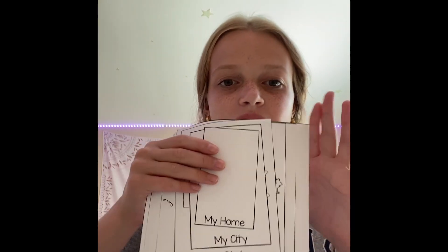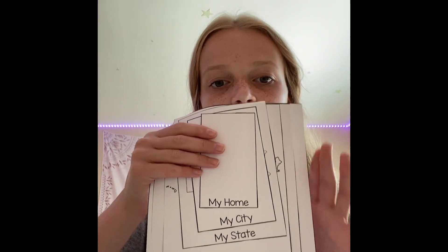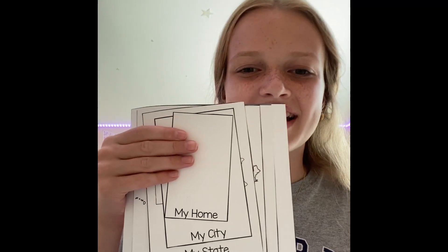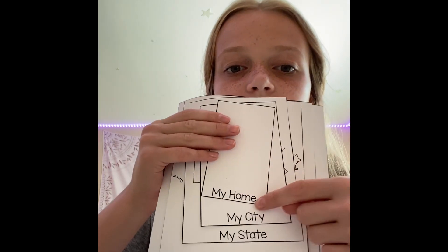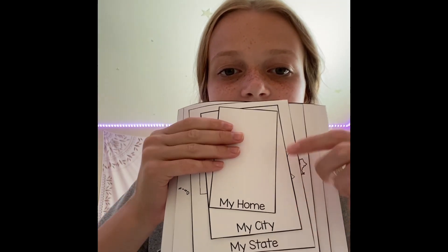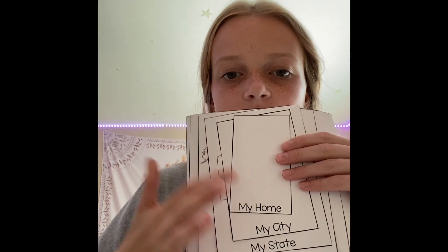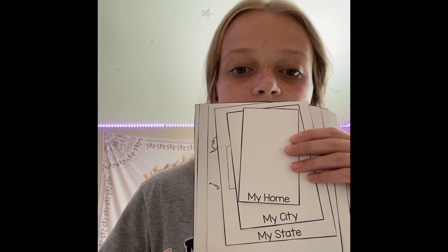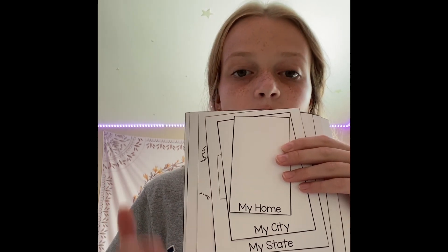When you finish cutting out all the boxes, you can see they go from smaller to larger, just like the other rainbow papers. On the bottom of each one it says something: my home, my city, my state, my country, my continent, and my world.